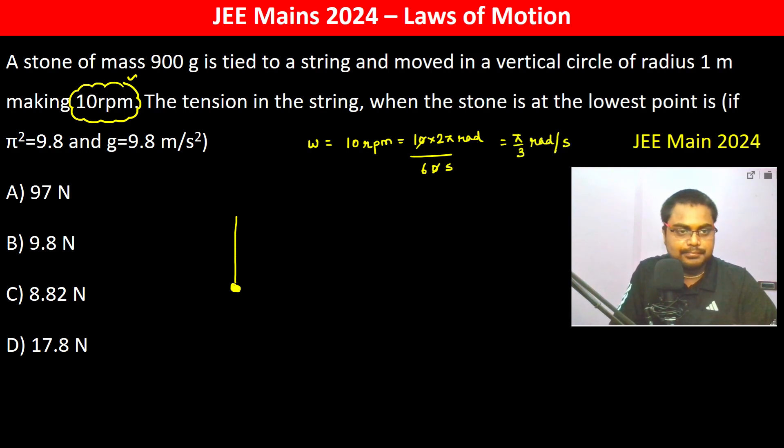Now the mass is 900 grams. If you see this is mg, this is T, and this is R. R is equal to 1 meter. So the tension in string when the stone is at the lowest point.